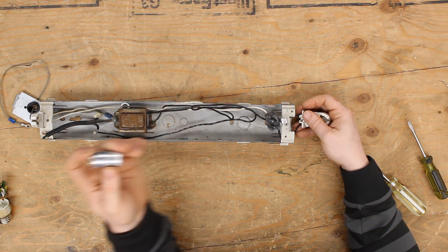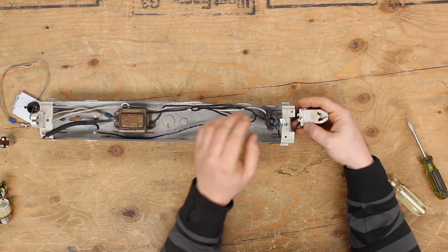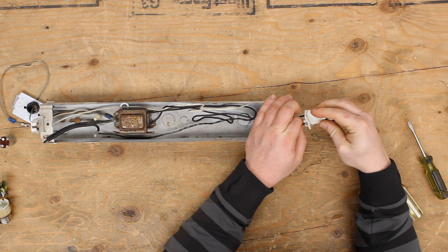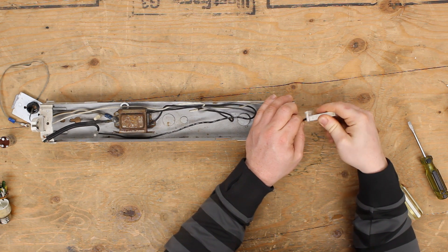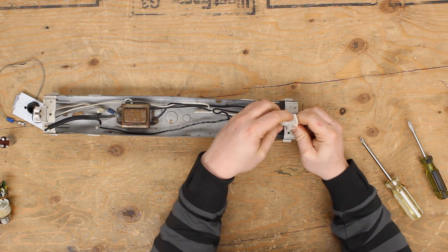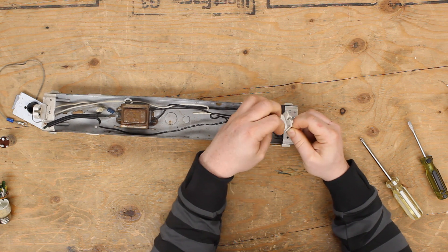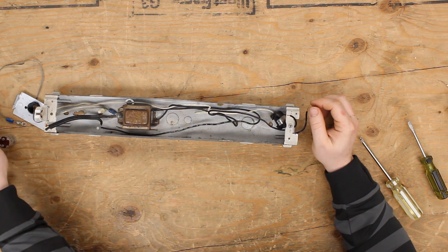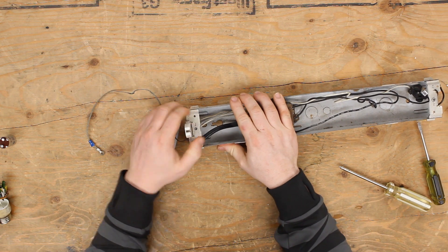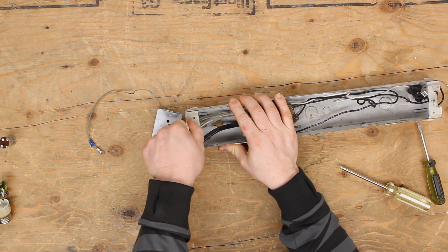I understand that in Europe and Asia and pretty much anywhere else in the world, starters and this style of fluorescent light is still commonly used. But here in Canada specifically, and I know for the United States as well, we didn't really use these by the time the 1970s came around.